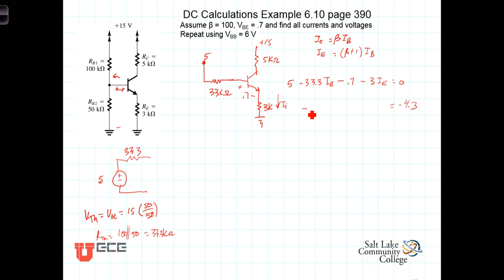Now we know that I sub E is equal to beta plus 1 times I sub B, so we can rewrite this as: bringing the 5 minus the 0.7 to the other side gives negative 4.3, and then we have negative 33.3 I sub B minus 3 times I sub E, which is 101 times I sub B. Beta is 100, so beta plus 1 would be 101 times I sub B, all equals negative 4.3. We can simplify: 303 I sub B plus 33.3 I sub B equals 336.3 I sub B equals 4.3, or we get that I sub B is equal to 12.77 microamps, or 0.01277 milliamps.